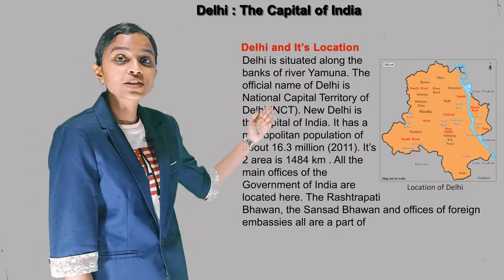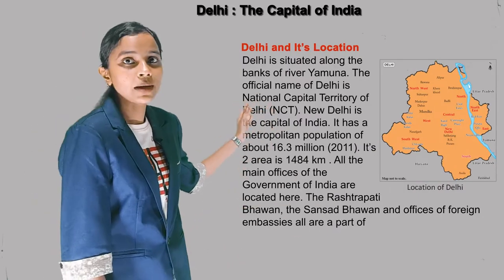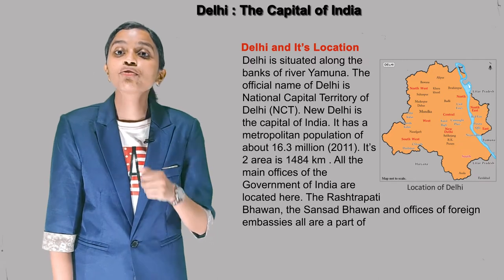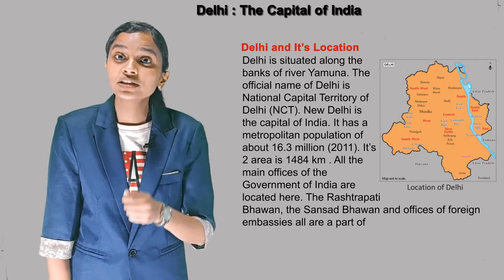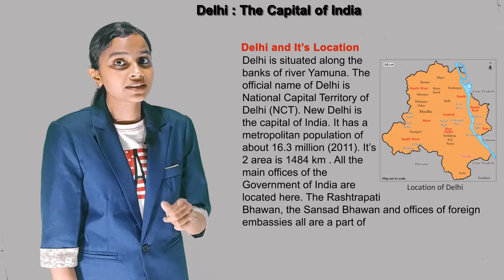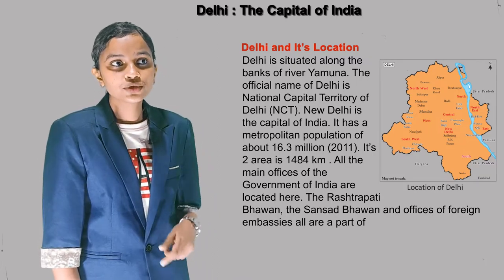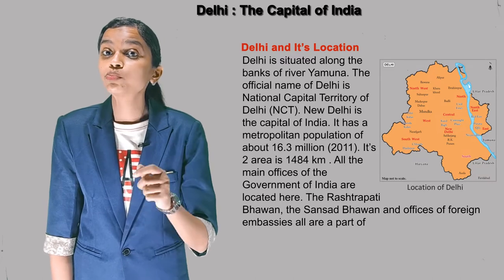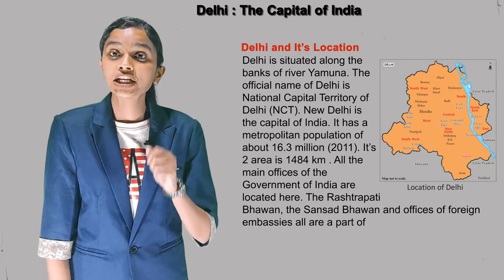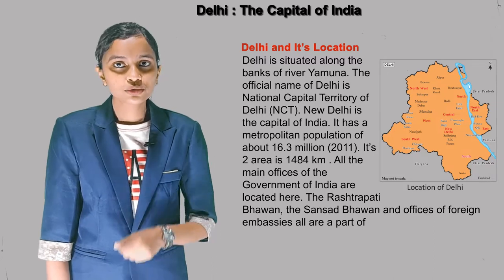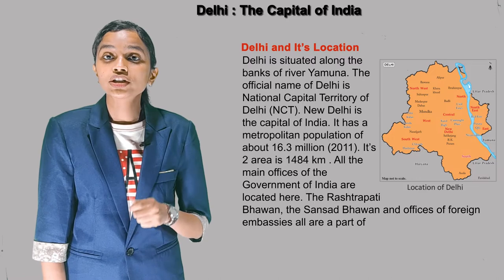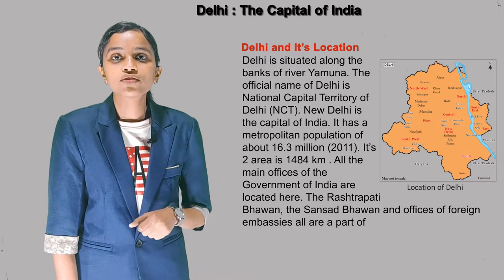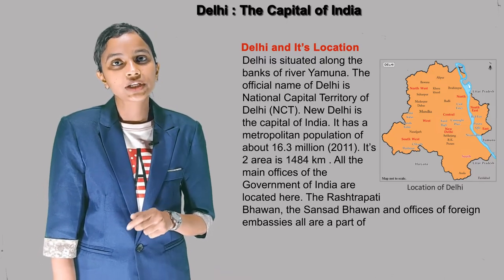Delhi and its location. As you see in the map, Delhi is situated along the banks of river Yamuna. The official name of Delhi is National Capital Territory of India, i.e. NCT. New Delhi is the capital of India. It has a metropolitan population of about 16.3 million according to 2011. Its area is 1484 square kilometers. All the main offices of the government of India are located here.